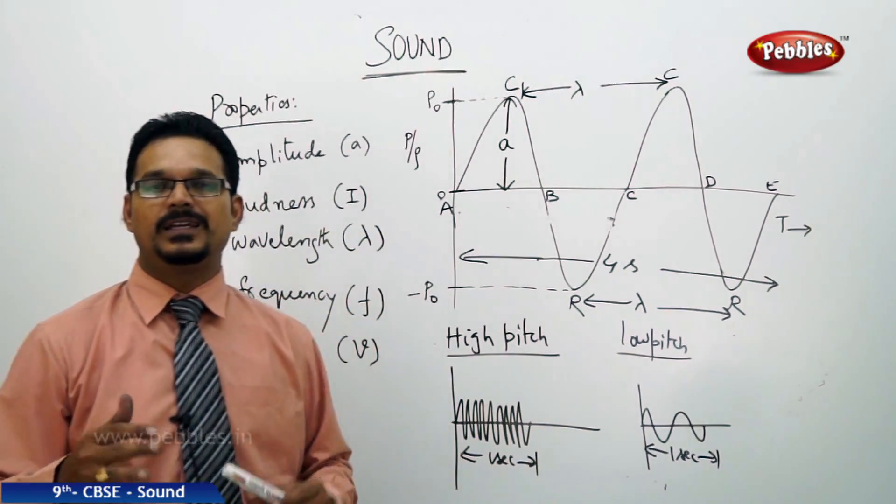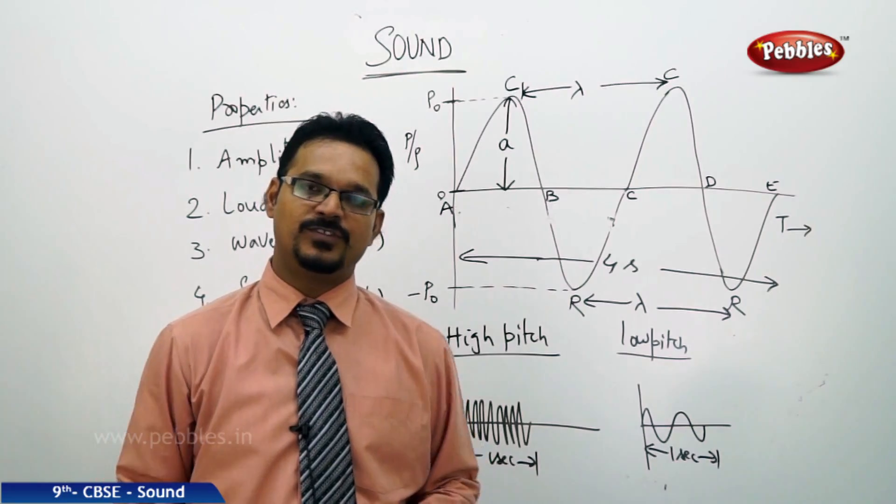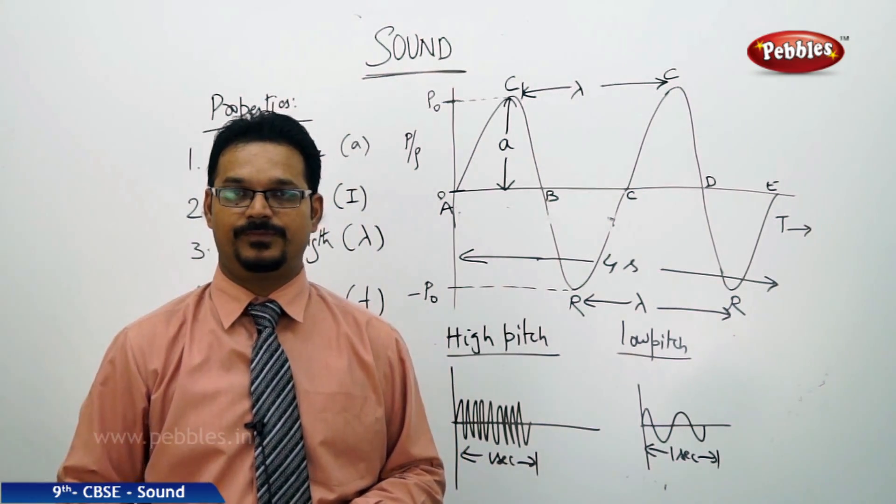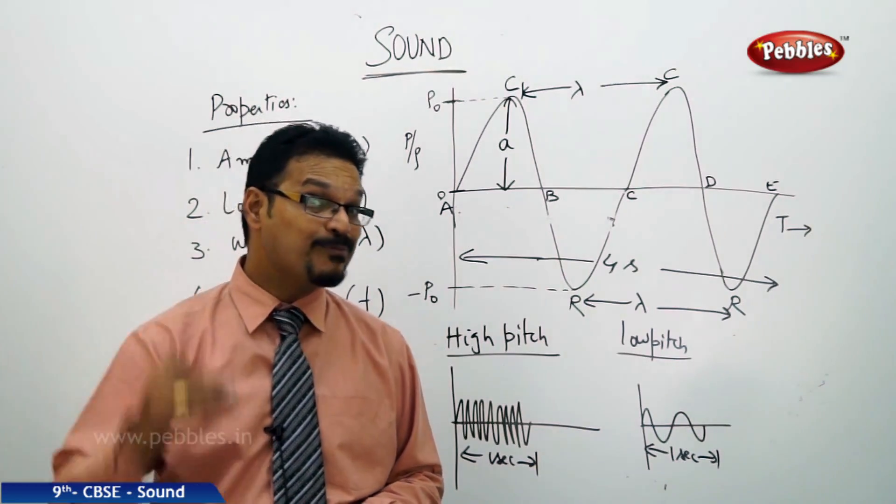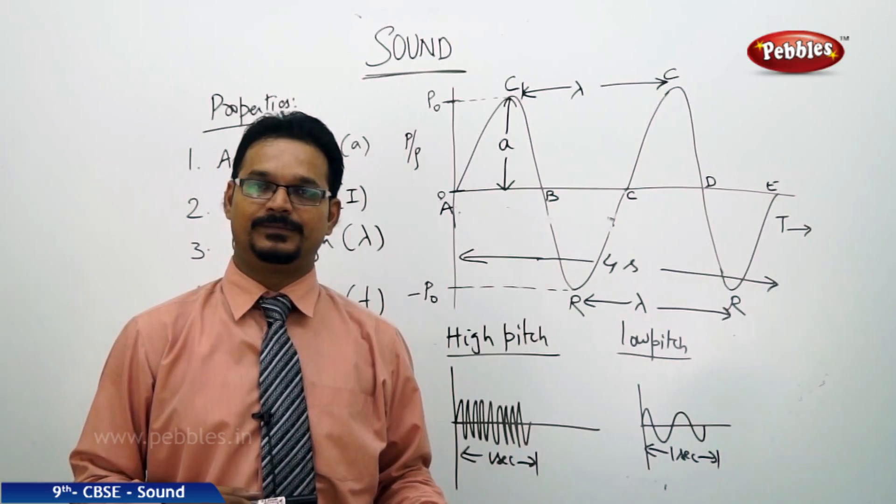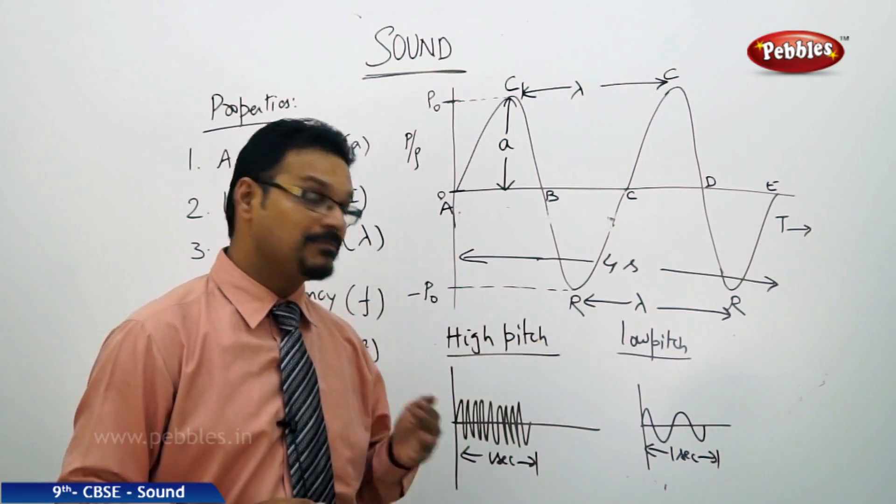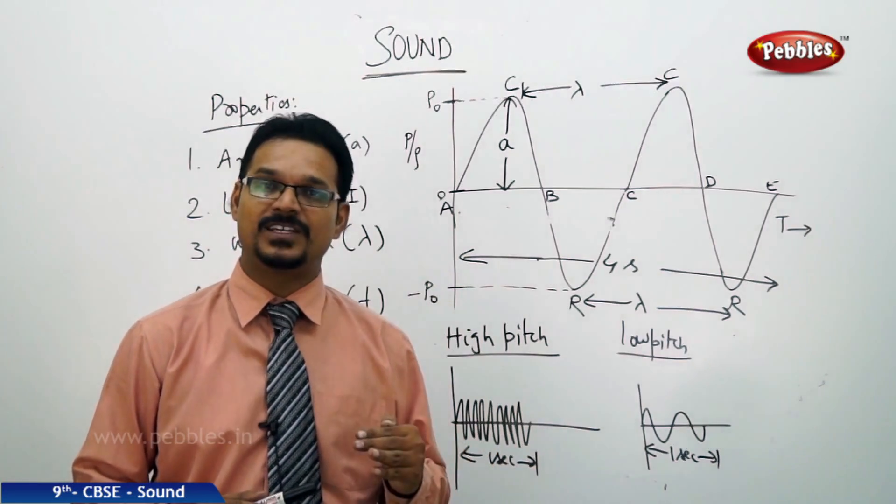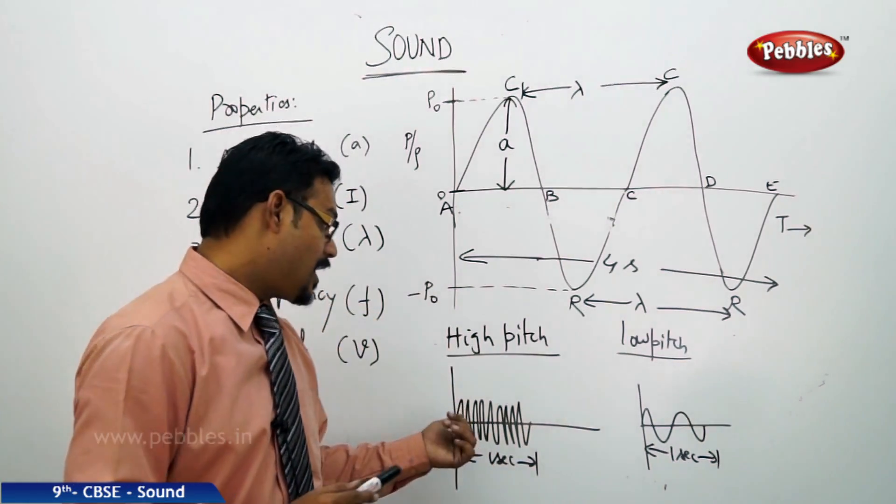You know, in general, on average, if you take, in general, males have louder sound. Louder sound and low pitch. So, we can speak loudly. But, the pitch is less. Females have soft sound. But, they have high pitch.